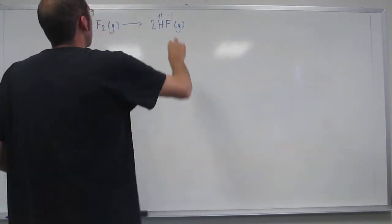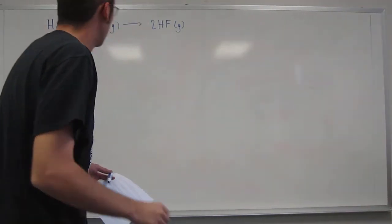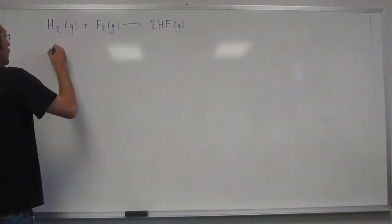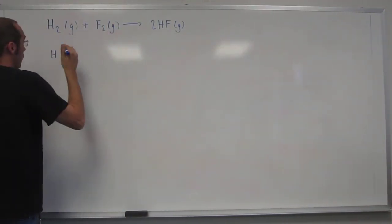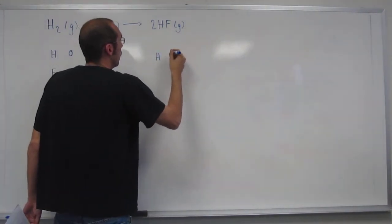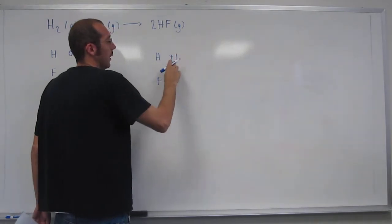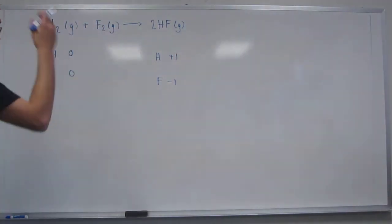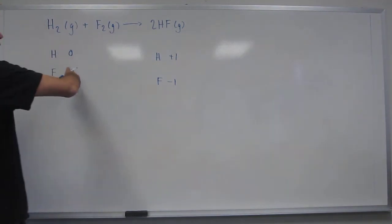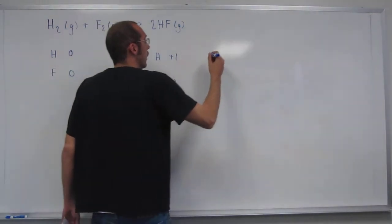So let's just erase that and we'll put the oxidation numbers from the beginning. So H over here was zero. F over here was zero. H over here was plus one. F over here was minus one. That's what we figured out what H was. So did they change or did they not? Yes, they changed. So this is a redox reaction.